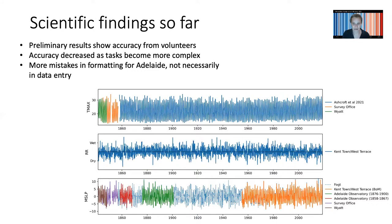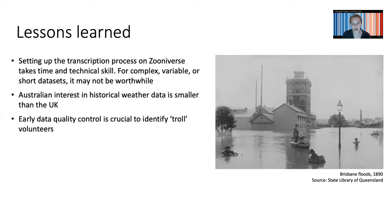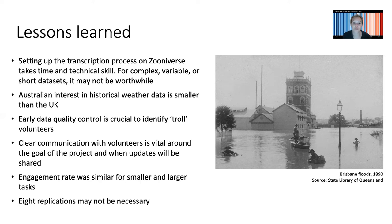This graph shows the gaps that are now being filled — the orange and purple are new observations in Adelaide, and we have a similar value for Perth. You can see this extended series being built right now. We learned a lot: setting up these projects takes a lot of time, and historical weather data in Australia just doesn't have quite the same interest as it does overseas — maybe because of our colonial history or our small population. Data quality needs to be checked early; we did have one person who entered deliberately incorrect data, and picking that up early would have been very helpful. Clear communication with volunteers is super important, and replicating eight times might not necessarily be required.